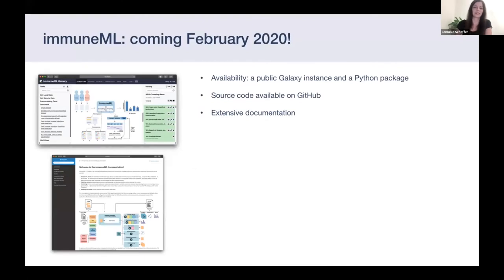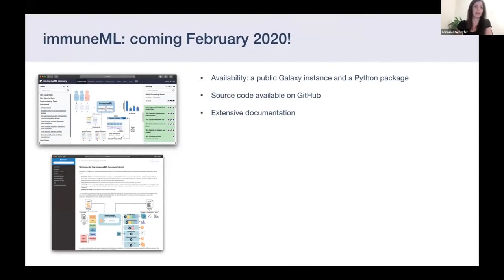That was an example use case. ImmuneML will be available soon as a Python package and on a public Galaxy instance, with the source code available on GitHub. It will also be integrated with the iReceptor gateway, so users will be able to download data from iReceptor directly into Galaxy.